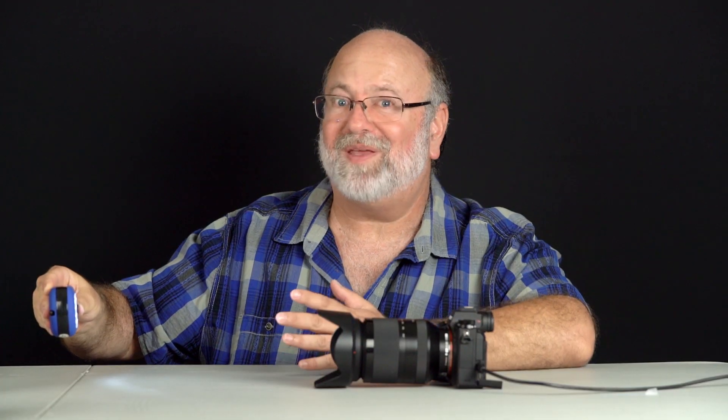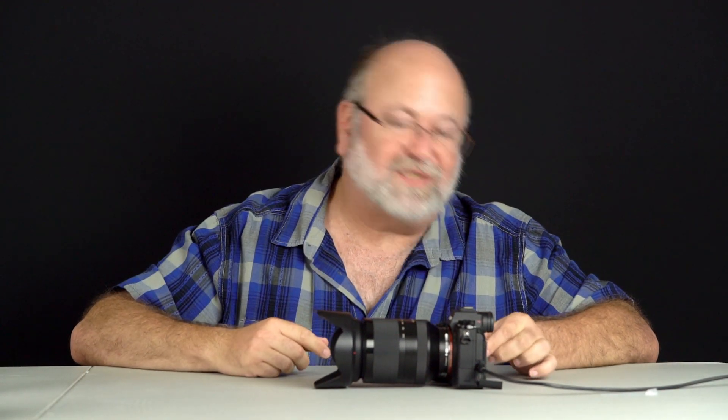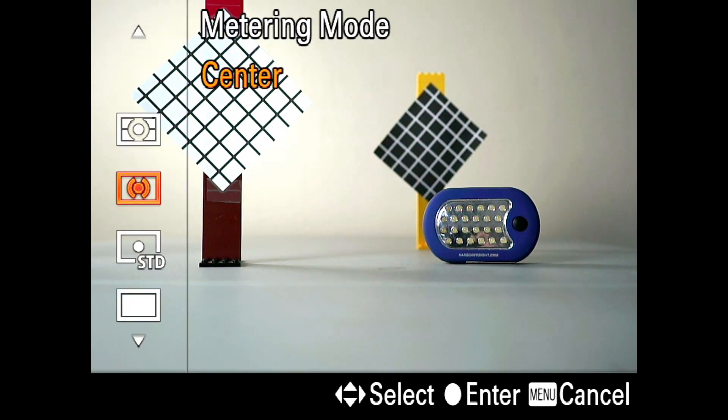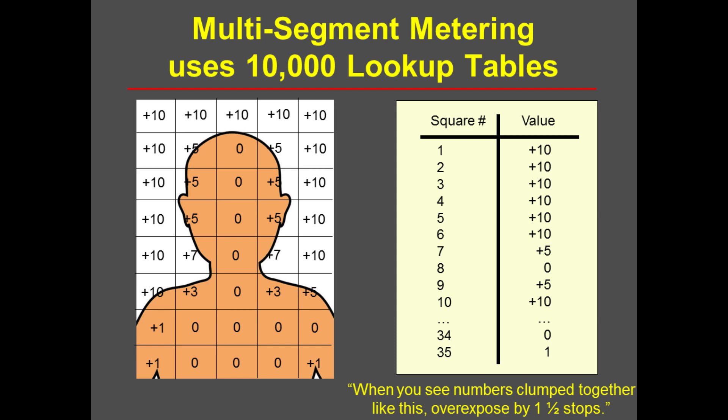Then somebody decided, how do we make this even better? Nikon, once again, was the leader in the field. They came out with something called matrix metering, which Canon calls evaluative metering and Sony calls multi-segment metering. It all does the same thing, and it's so good that I keep it as my default metering mode. Multi-segment metering breaks down the image into smaller components. Every camera has a different amount, but it has a little tiny database inside that recognizes a light distribution of a bad exposure and knows how to fix it. For example, if there's a classic backlit person, the camera is programmed to say: if you see a light distribution that looks like this, overexpose by one and a quarter stops and you're done.